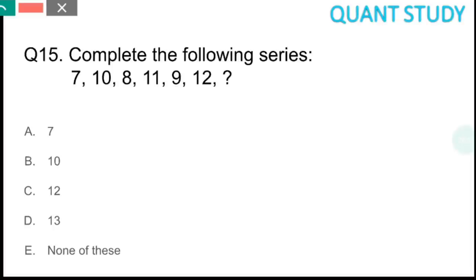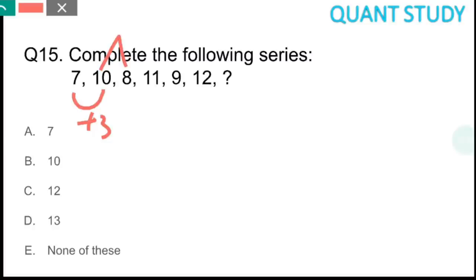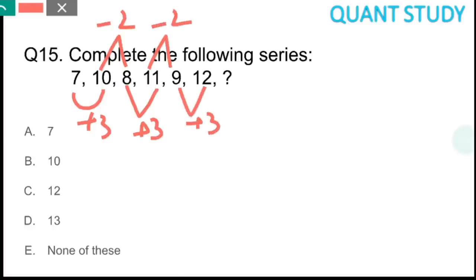Question 15 also requires completing a series. The pattern alternates between adding and subtracting: +3, -2, +3, -2, +3, -2. The series is 7, 10, 8, 11, 9, 12, and the next number after 12 is 12 minus 2 equals 10. The answer is option B, 10.